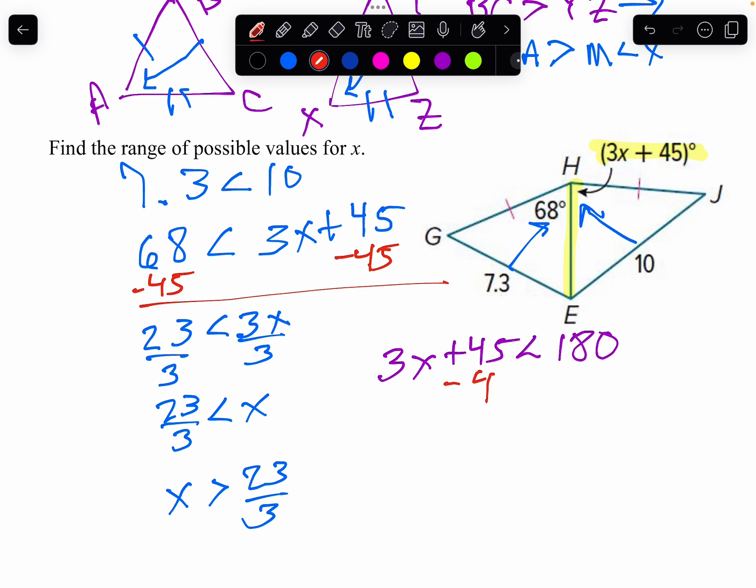So I minus 45 from both sides. And we get 3X is less than, let me see, 10 minus 5 is 5, and 7 minus 4 is 3. So 3X is less than 135.